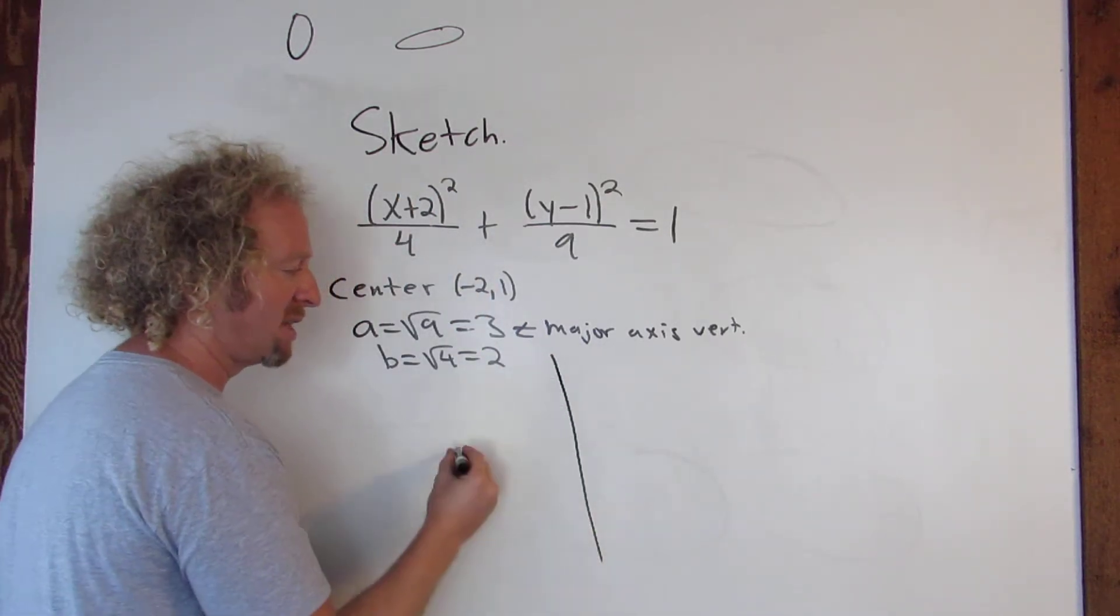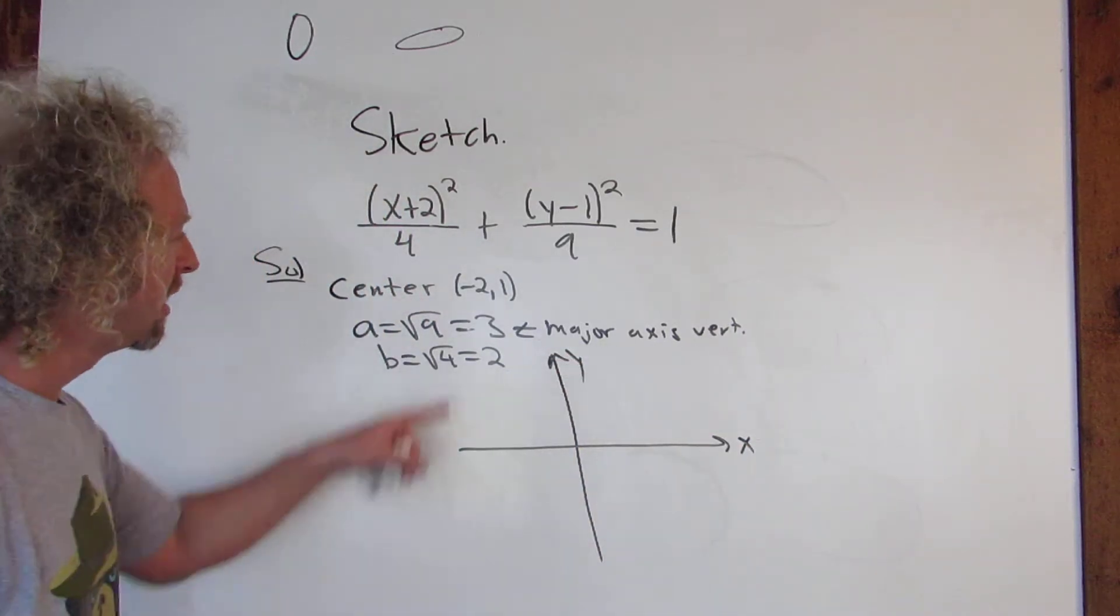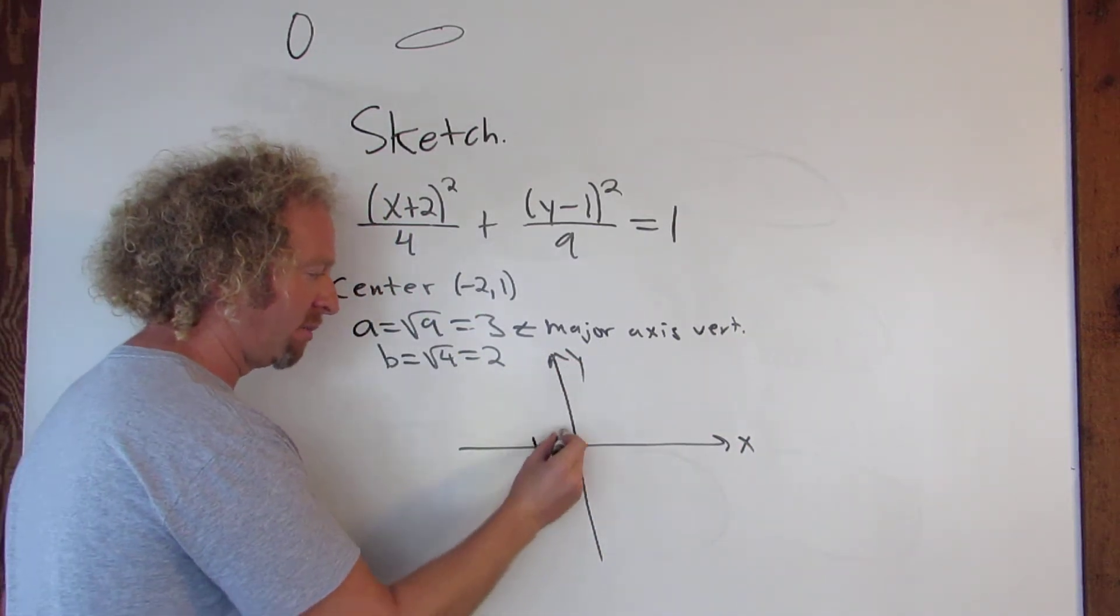There's the y-axis and there's the x-axis. Okay, center is negative 2, 1. So you go left 2 and up 1, put a dot.